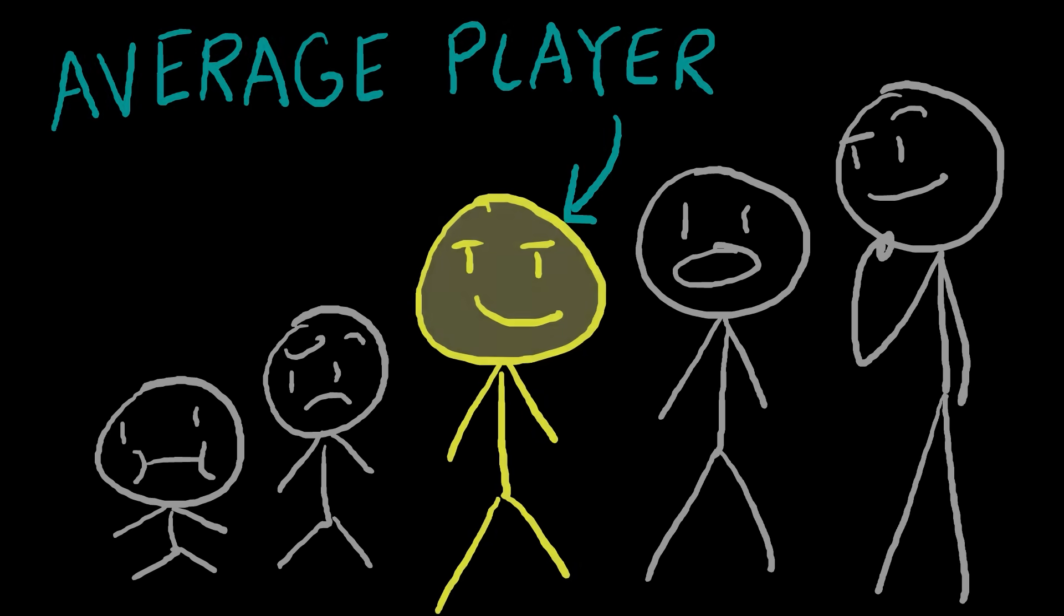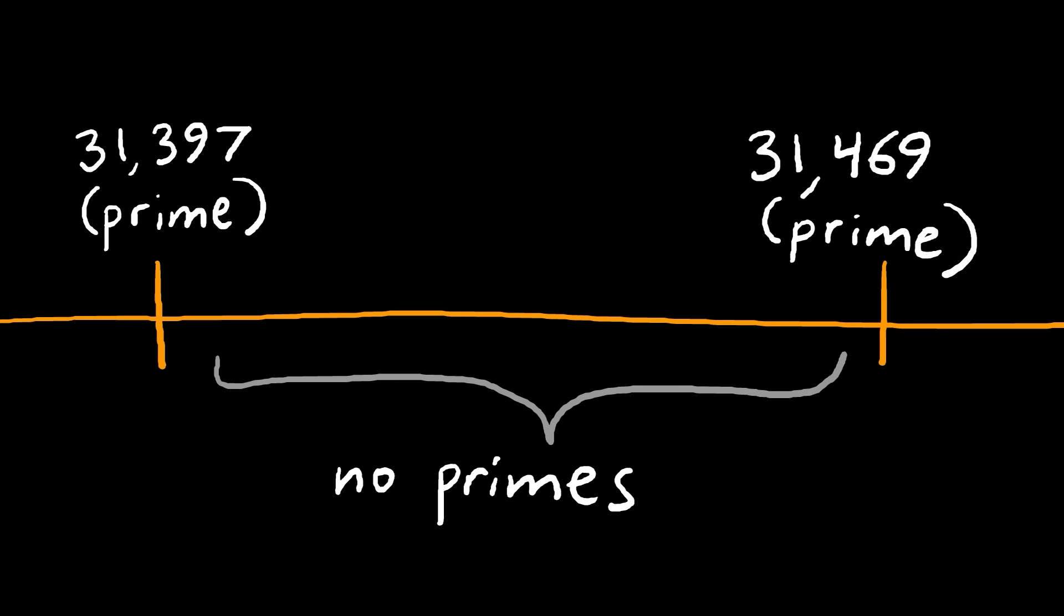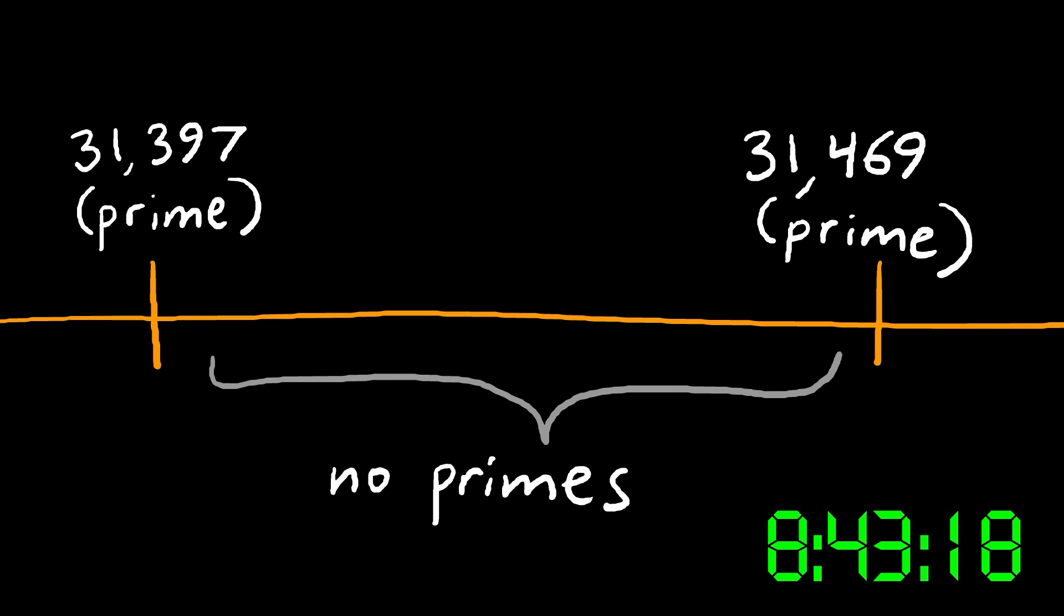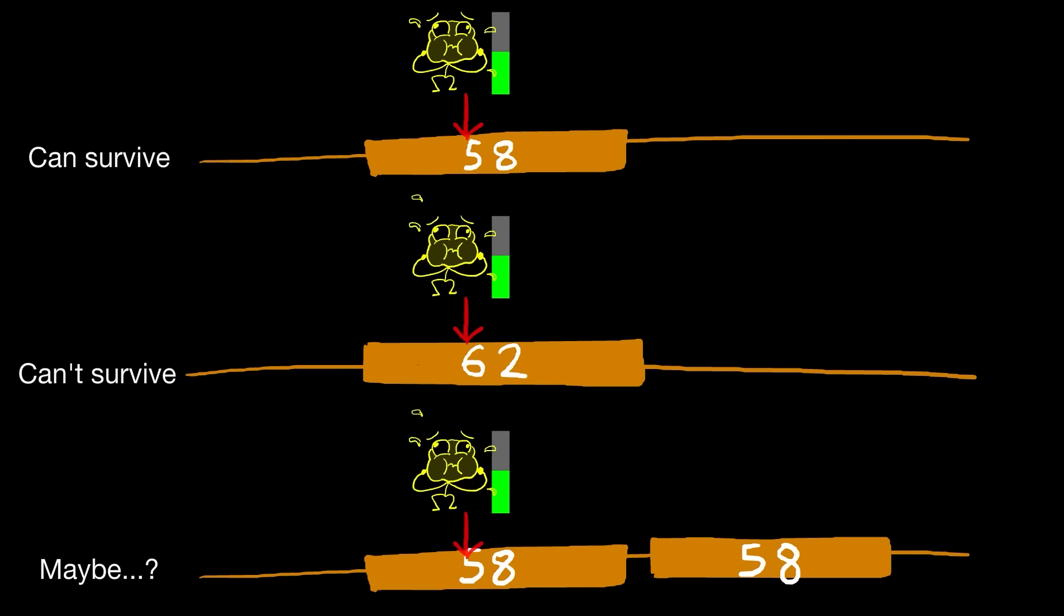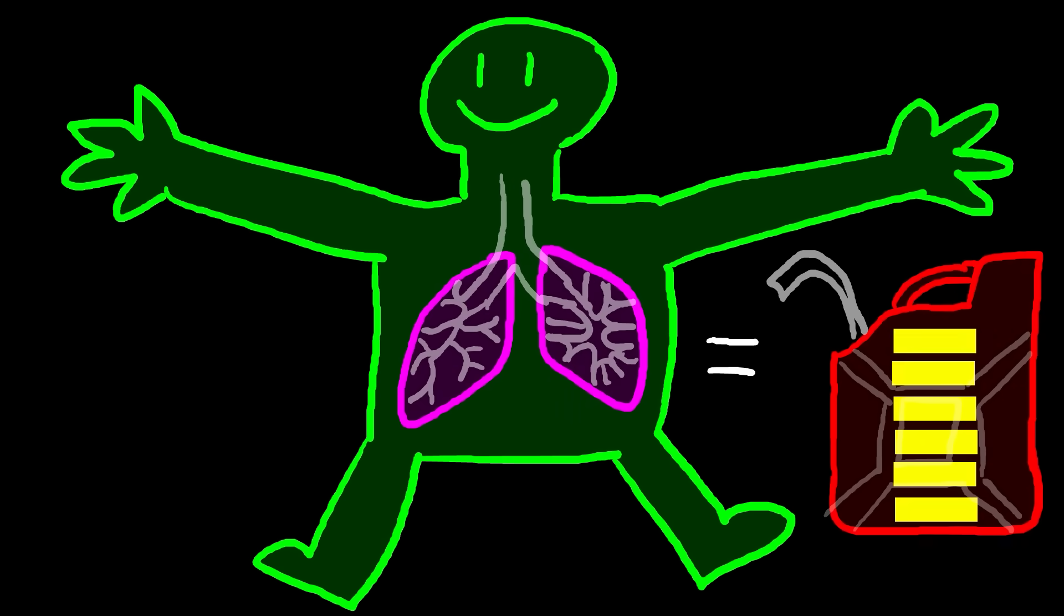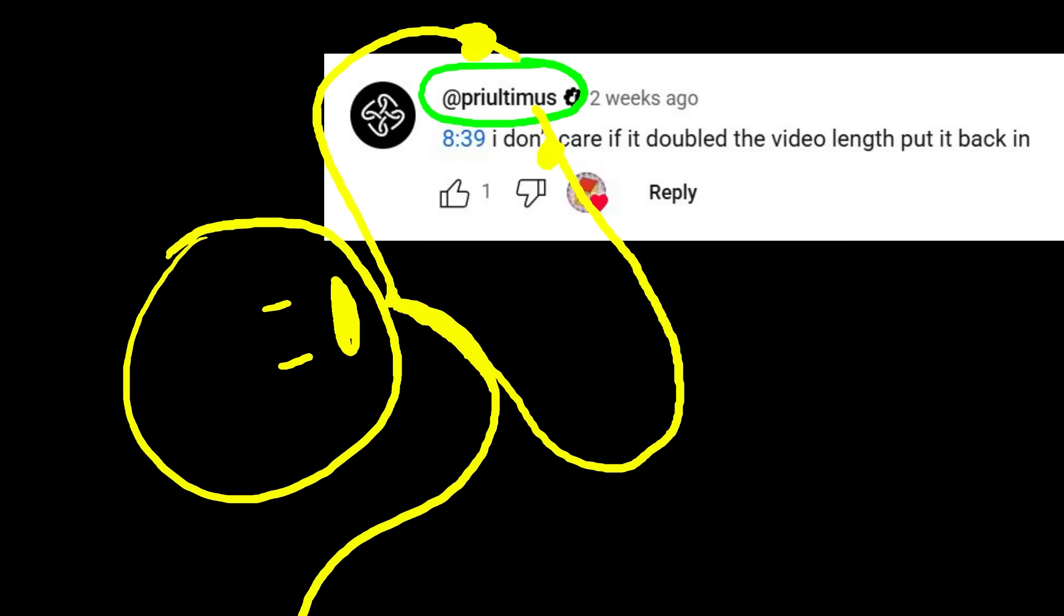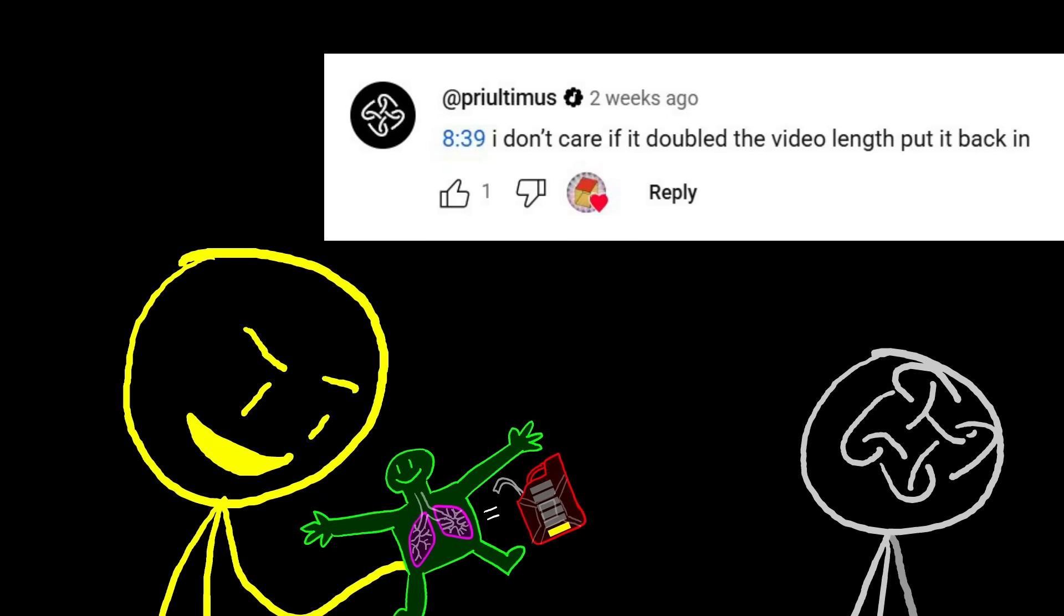In part 1, I estimated the average player could hold their breath for 60 seconds and the first gap over 60 appears at 31,000, 8 hours in. But that assumes players' lungs reset after each breath and that isn't true. Would you be able to survive a 58 gap and then another 58 gap? Probably not. So as another approach, I considered depicting lungs like fuel tanks that get a dosage of more oxygen at each prime number but don't entirely refill. But I also cut that portion out of the video due to length. In response, Priultimus commented, I don't care if it doubled the video length, put it back in. So let's do that.